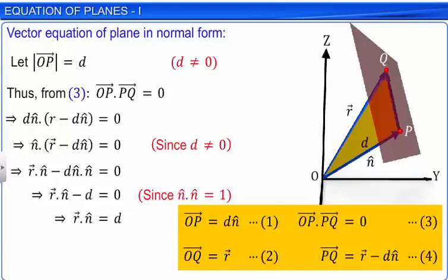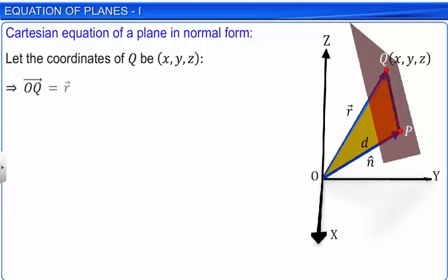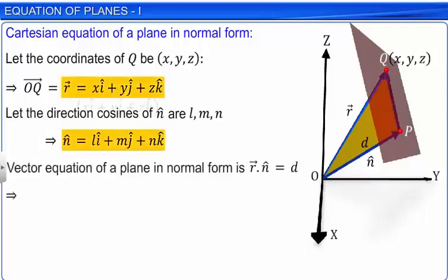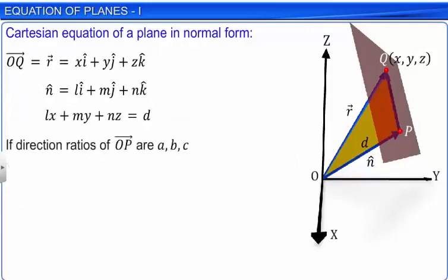Let us now derive the normal form of the Cartesian equation of a plane. Let the coordinates of point Q be x, y and z. Thus, the position vector of point Q can be written in its component form as shown. Also, if l, m and n are the direction cosines of unit vector n̂ normal to the plane, then unit vector n̂ can be written in its component form as shown. Substituting the component forms of vector r and unit vector n̂ in the vector equation of a plane in normal form, we get the Cartesian equation of the plane in normal form. If the direction ratios of the normal to the plane from the origin are given, then the vector and Cartesian equations of the plane in their normal forms are as shown.